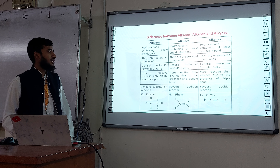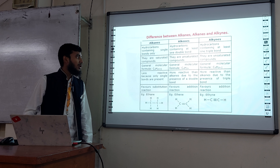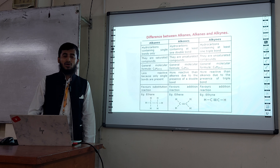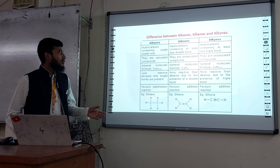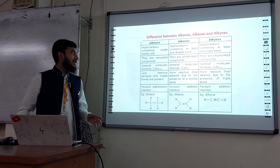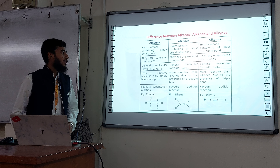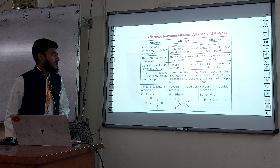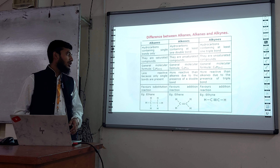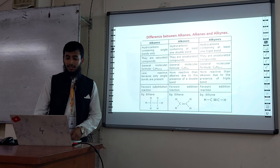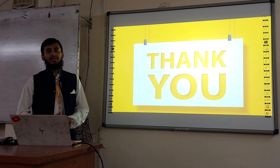Alkynes are hydrocarbons containing at least one triple bond. They are unsaturated compounds. The general molecular formula is CnH2n minus two. They are generally more reactive than alkanes due to the presence of the triple bond. They favor addition reactions. Example: ethyne.